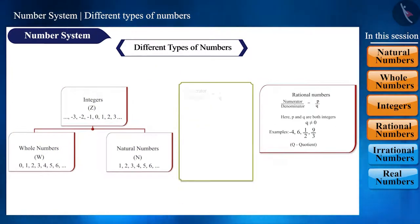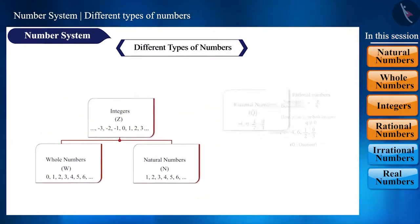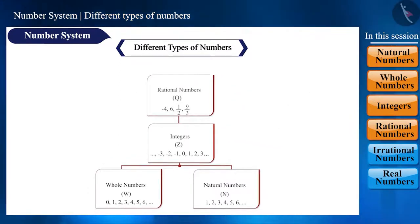Yes, we can represent all these numbers in the form P by Q, such as 30 is equal to 30 by 1, minus 5 is equal to minus 5 by 1. Here, the numerator P and the denominator Q are both integers. That is, all these numbers are rational numbers.